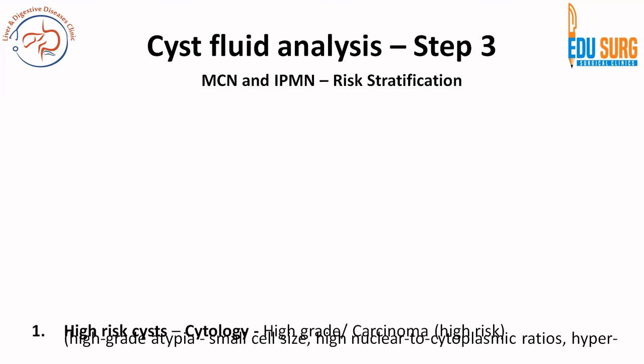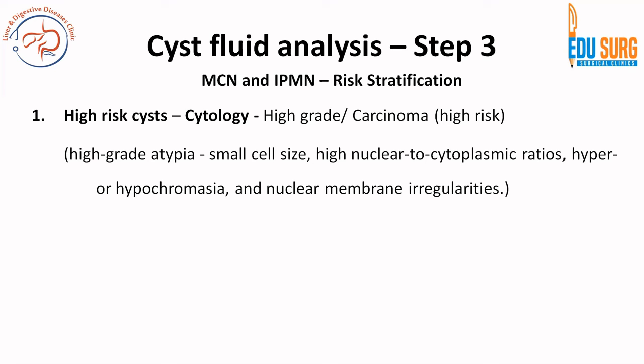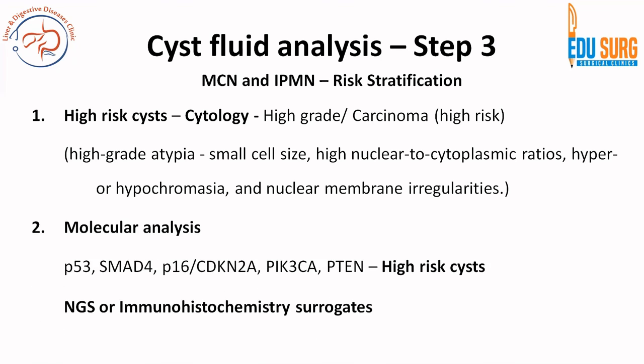Let us see about risk stratification - low risk versus high risk. There are two important things that help in risk stratification: one is cytology. What are high risk cysts in cytology? There should be high grade atypia. What is suggestive of high grade atypia? From Robins pathology: small cell size, high nuclear to cytoplasmic ratios - meaning the cell is small and the nucleus is large - hypochromasia or hyperchromasia meaning the color is either dark or very light, and nuclear membrane irregularities. If you see these features it is a high grade cystic neoplasm or carcinoma. In molecular analysis: P53, SMAD4, P16/CDKN2A, PIK3CA, and PTEN - if these markers are mutated it is a high risk cyst.